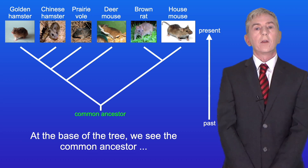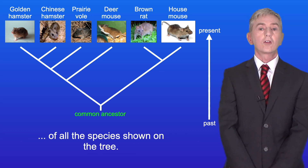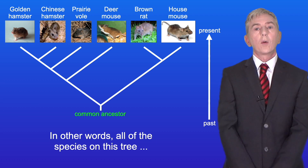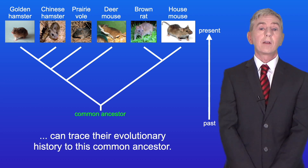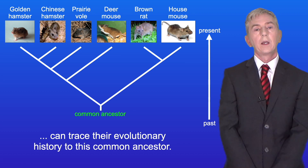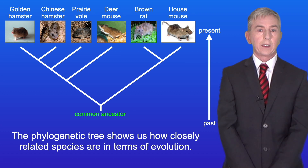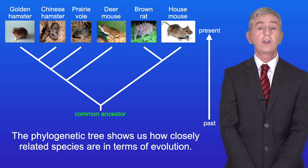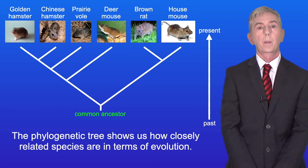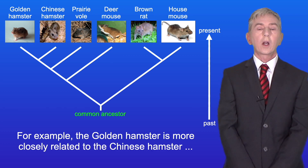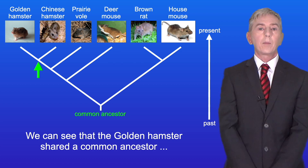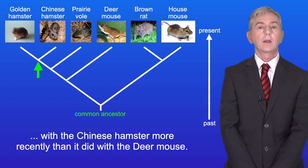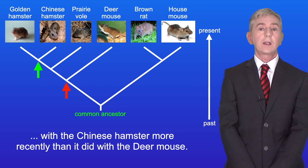At the base of the tree, we see the common ancestor of all the species shown on the tree. So in other words, all of the species on this tree can trace their evolutionary history to this common ancestor. The phylogenetic tree shows us how closely related species are in terms of evolution. For example, the golden hamster is more closely related to the Chinese hamster than it is to the deer mouse. We can see that the golden hamster shared a common ancestor with the Chinese hamster more recently than it did with the deer mouse.